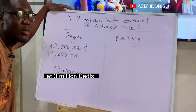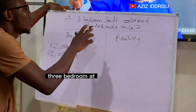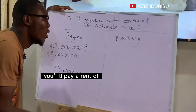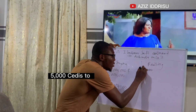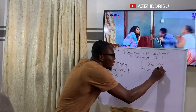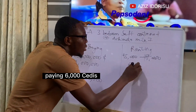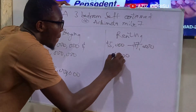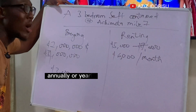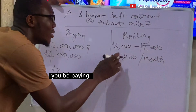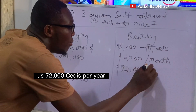If you're renting that same three-bedroom at Achimota Mile 7, you pay a rent of five thousand to seven thousand cedis per month. So averagely you'll be paying six thousand cedis per month. Annually, you'll be paying six thousand times twelve months, which gives us seventy-two thousand cedis per year.